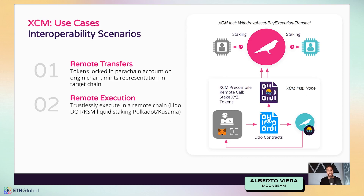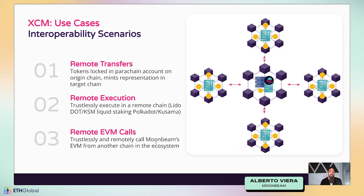The second scenario is remote execution — you can actually transact arbitrary bytes that perform an action in a destination chain, as I explained with the Lido example. The third is remote EVM calls, still being worked on and available on Moonbase Alpha testing. It will allow you to trustlessly and remotely call Moonbeam's EVM from another chain in the ecosystem. In bridges you can do that with GMP protocols, but on Polkadot it's different because you have to do this in a trustless way.